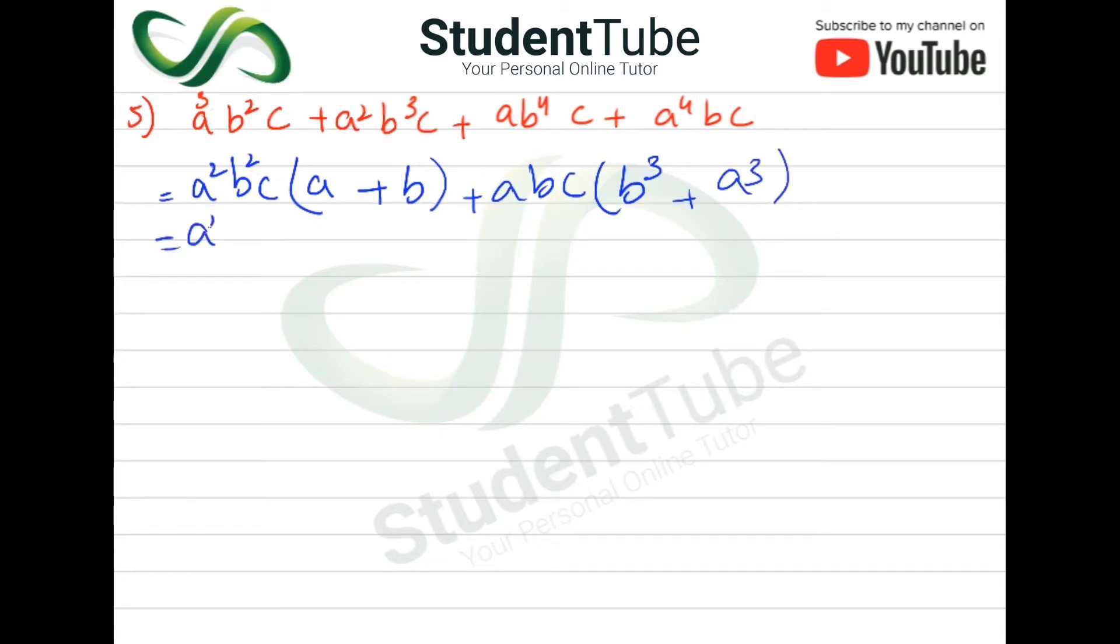Then we will write it like this: a²bc(a+b) + abc and we will give it a³ + b³.